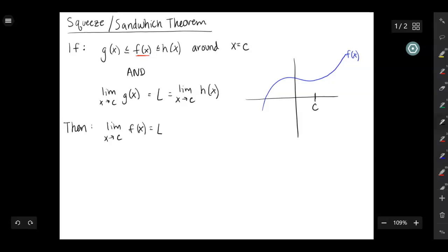What this theorem says is that if you can find a function that's always on top of f and always beneath f. So let's say we have our function, we'll let this one up here be h of x. And then we have another function that's down here beneath it. That's g of x.